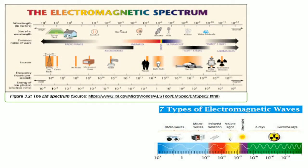As a review, we have here the electromagnetic spectrum. We have the 7 types of electromagnetic waves arranged from the longest wavelength up to the shortest wavelength: radio waves, microwaves, infrared radiation, visible light, ultraviolet, x-rays, and gamma rays.